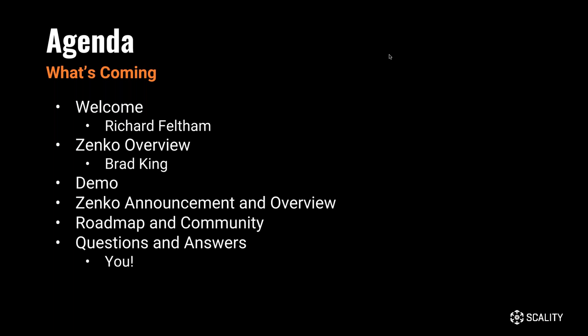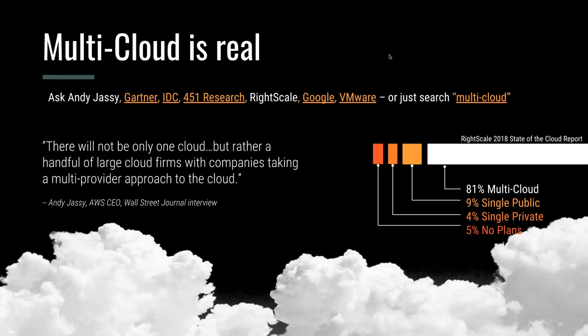Thank you all for joining. We'll start with an overview of what Zenko is. The word Zenko is a Japanese word for a celestial fox with magic powers — that was the inspiration for the technology. The other inspiration was the realization that multi-cloud is very much for real. A lot of recent studies confirm this: we've talked about private cloud, public cloud, hybrid cloud, and now multi-cloud.